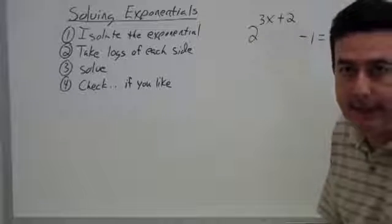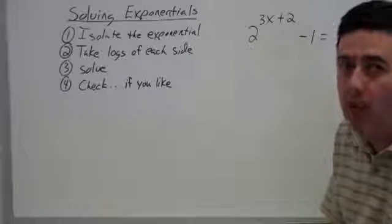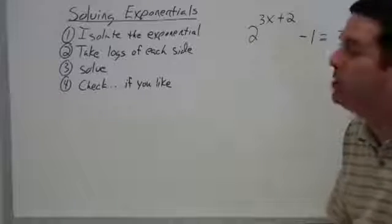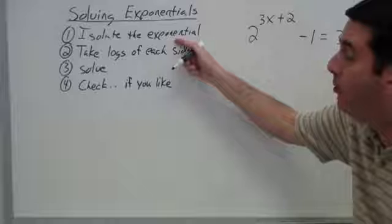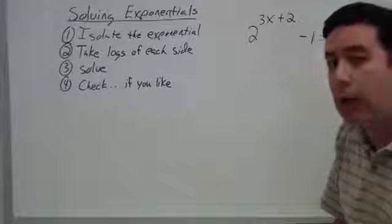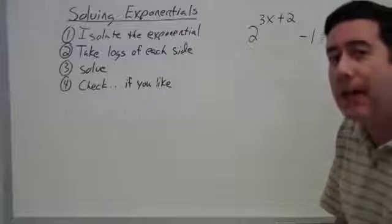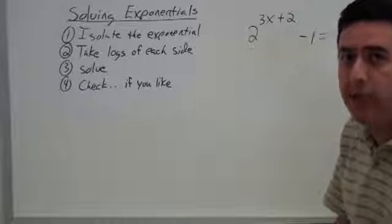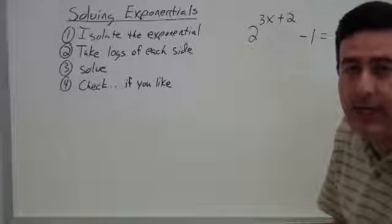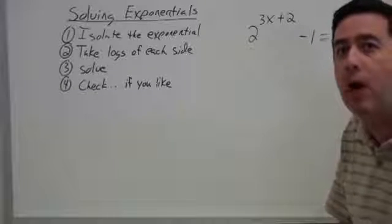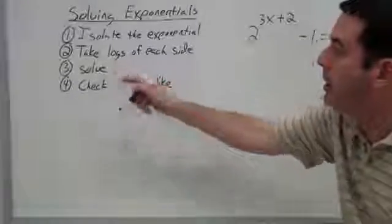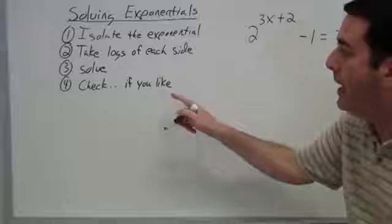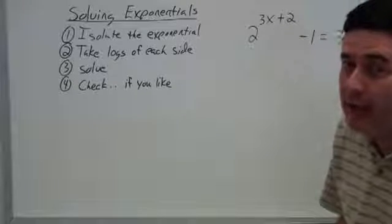If you're solving something that is exponential, the way you want to do that is to first isolate the exponential part, getting it by itself. Next, you'll take logs of each side. That allows you to move the exponent down to the front, down as a multiplier, where you'll be able to get at it. The third thing to do is to solve and then check if you like.